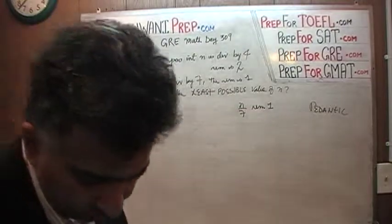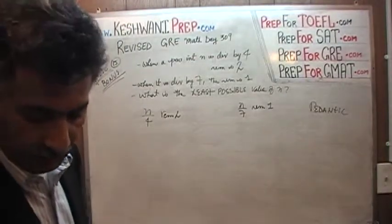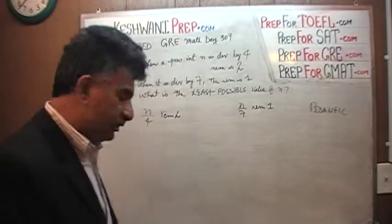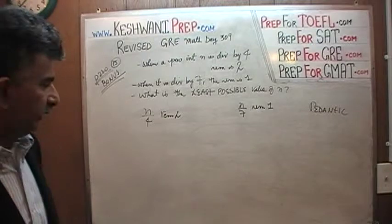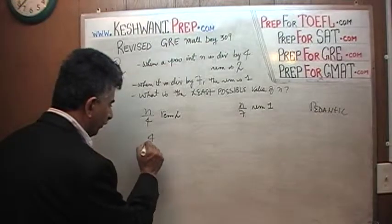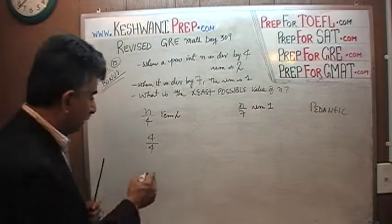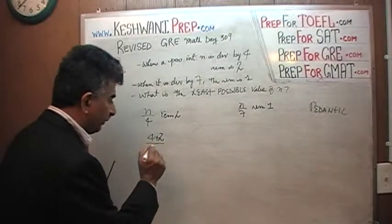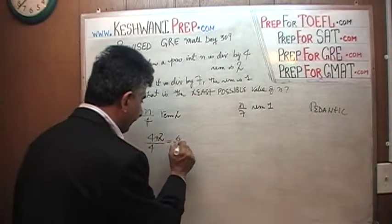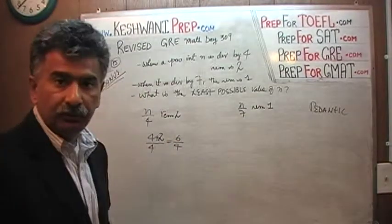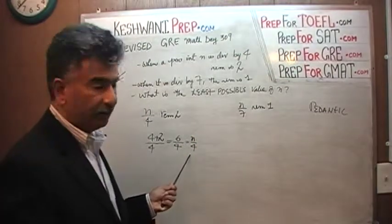So here is what is going on. What is the smallest number that will meet the first condition — when you divide it by 4, we get a remainder of 2? The smallest number would simply be: we know 4 goes evenly into 4, and if you want a remainder of 2, just add 2 to it, thereby forcing it to have a remainder of 2. In other words, 6 divided by 4 has a remainder of 2. So here N is equal to 6.